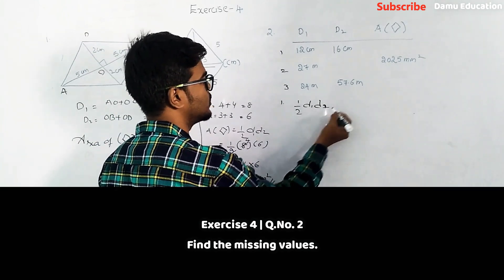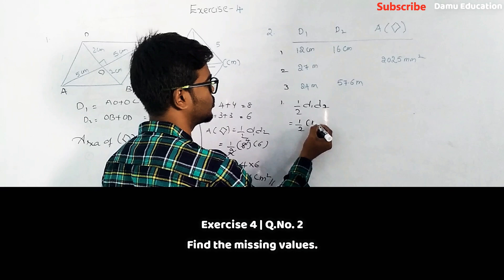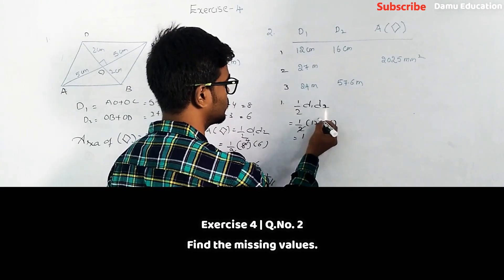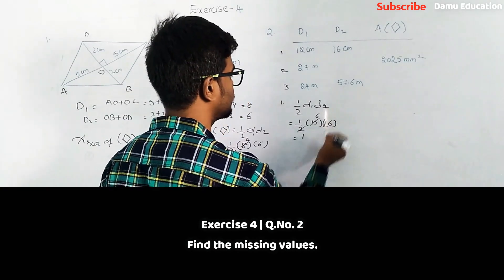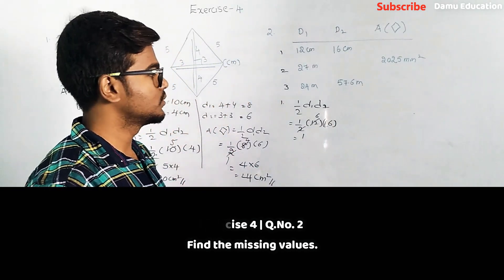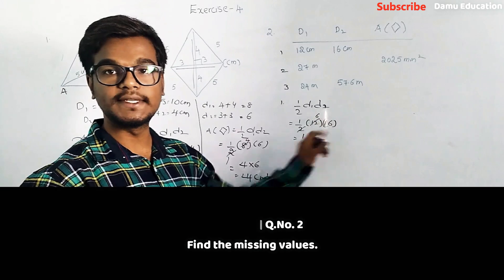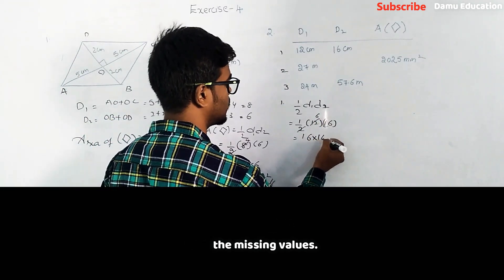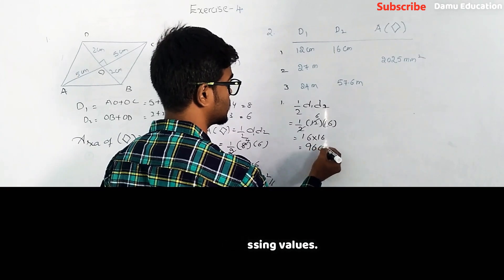That will be equal to half into 12 into 16. So 2 goes into 12 six times, 6 times 16 is 96. So 96 centimeter square.